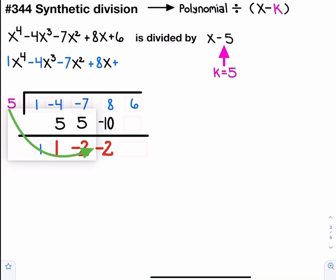Let's multiply that five out front by the negative two, which is negative ten. Add six and negative ten, make negative four.